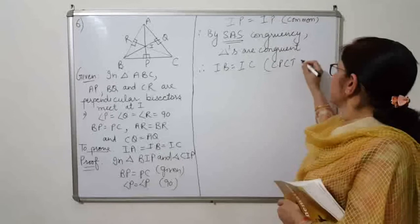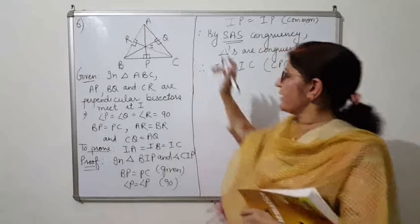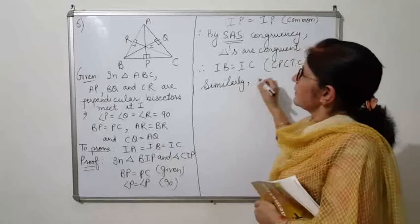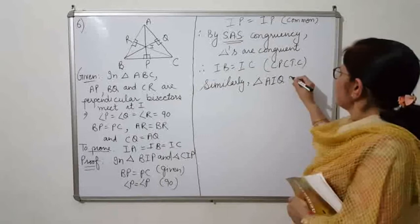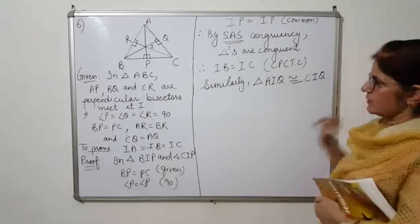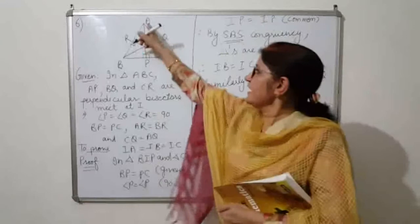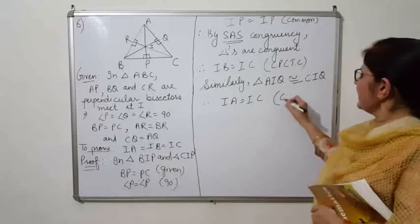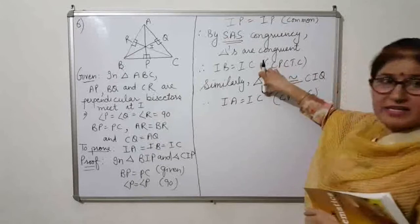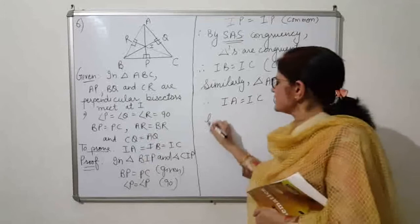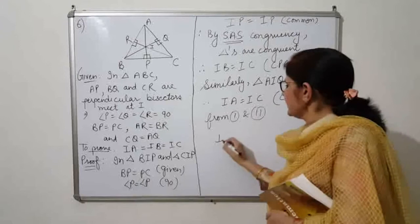Similarly, we take triangles AIQ and CIQ and prove them congruent, giving IA equals IC by CPCTC. Comparing these two results — IB equals IC and IA equals IC — we conclude that IA equals IB equals IC. Hence proved.